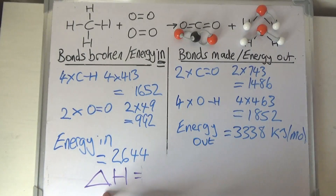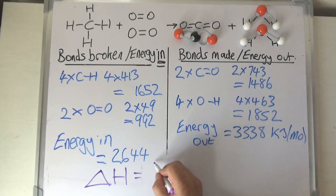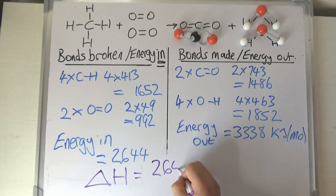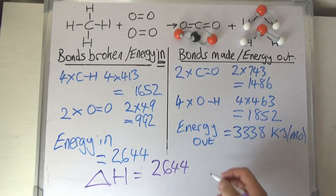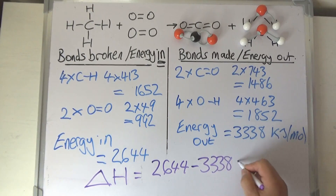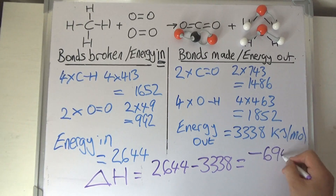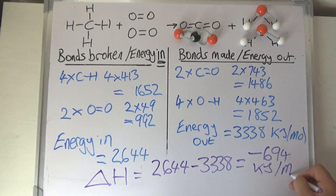The final step is to work out the overall energy change, which can also be given the symbol delta H. That's simply the energy in — the first number, 2,644 — take away the second number, 3,338, and that comes to minus 694 kilojoules per mole.